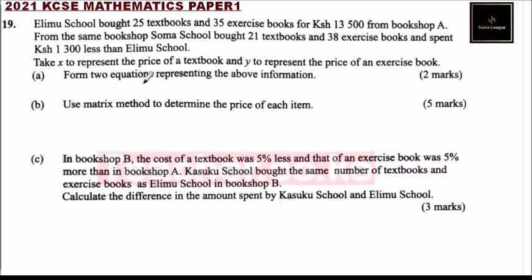Question number 19. Erimu school bought 25 textbooks and 35 exercise books for Kenyan shillings 13,500 from bookshop A. From the same bookshop, Summer school bought 21 textbooks and 38 exercise books and spent 1,300 Kenyan shillings less than Erimu. Take x to represent the price of a textbook and y to represent the price of an exercise book.